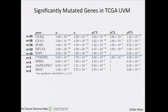Before getting back into copy number, I'd like to show some significantly mutated genes in this tumor type. There aren't a whole lot, but above the significance threshold we do see GNAQ and GNA11 mutations in 73 out of 79 total tumors. And then there's SF3B1, EIF1AX, and BAP1 mutations. These have also been seen in previous whole exome studies done on uveal melanomas.